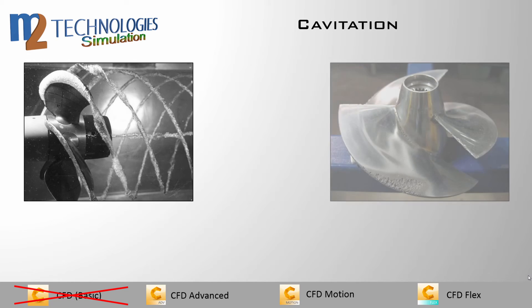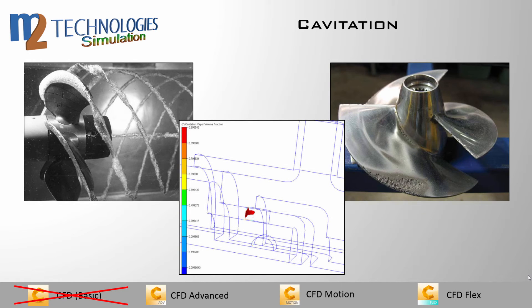Cavitation is a physical phenomenon that occurs in many high-velocity liquid flows. When the liquid pressure falls below the vapor pressure, vapor bubbles form in the liquid. Cavitation is commonly found in high-performance valves, flow control devices, pumps, and propellers, and can greatly reduce the efficiency of these devices. Prolonged cavitation leads to pitting and erosion of the device, resulting in costly downtime and repairs. The cavitation model tracks the vapor bubble volume fraction and predicts the onset and location of bubble formation within the flow.